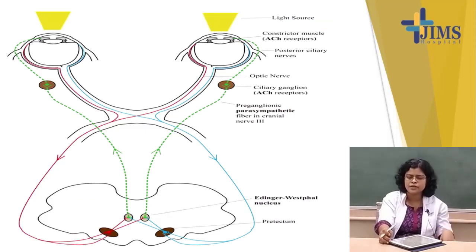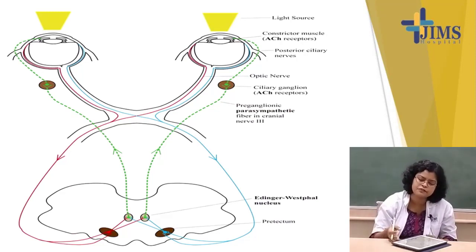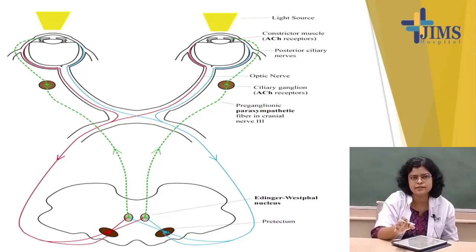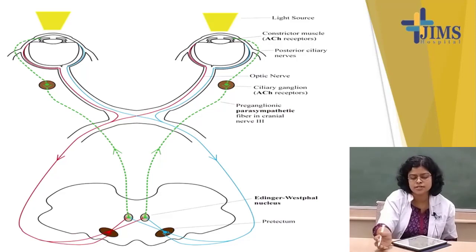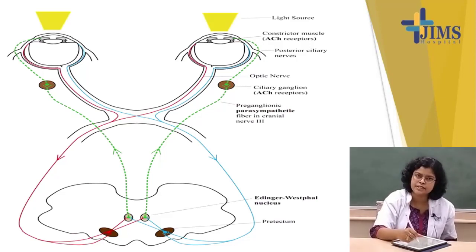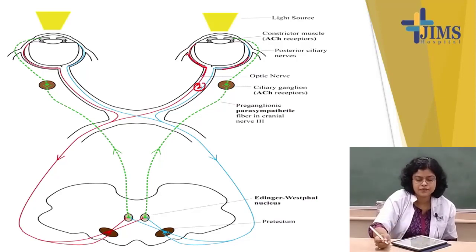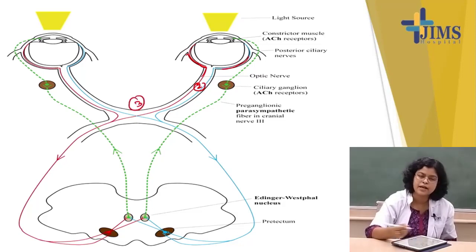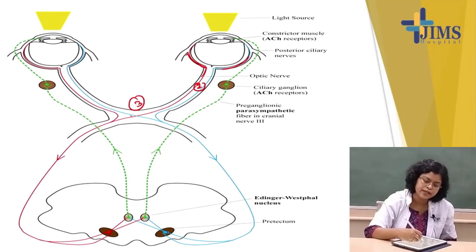In the light reflex pathway, first it starts from the retina. From the retina the impulse goes — second is optic nerve, then third is optic chiasma. In the optic chiasma, two things happen: the nasal fibers decussate and the temporal fibers remain uncrossed.